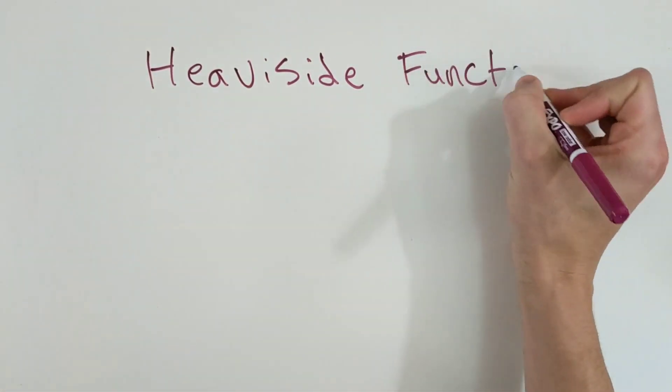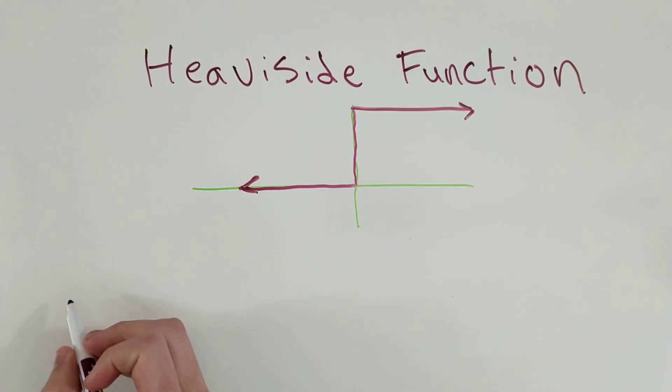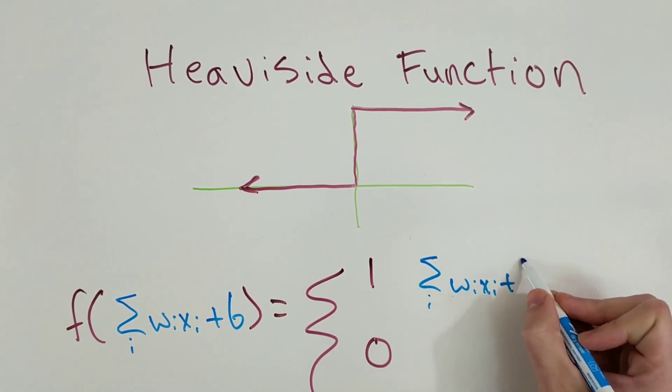In the classical formulation of a perceptron, this function is the Heaviside function, but for a neural network this function can be whatever you want.